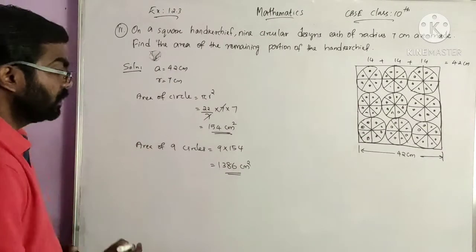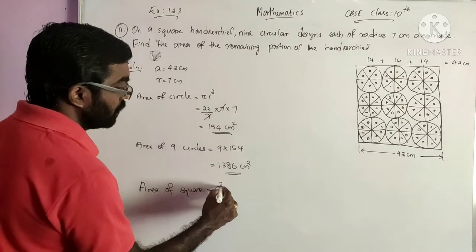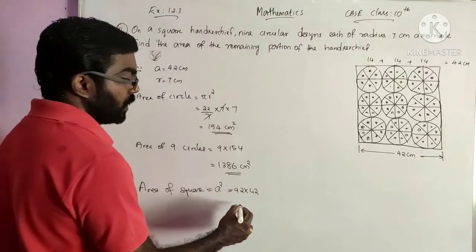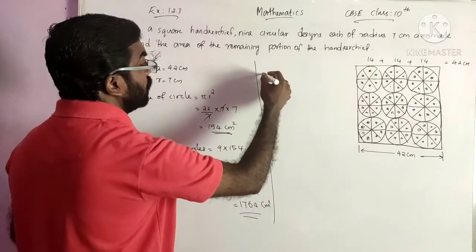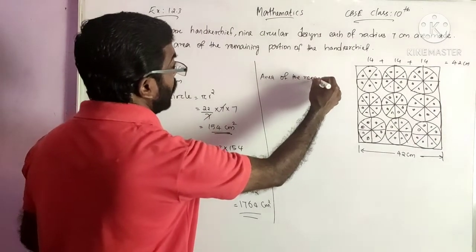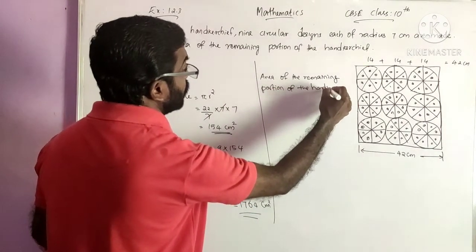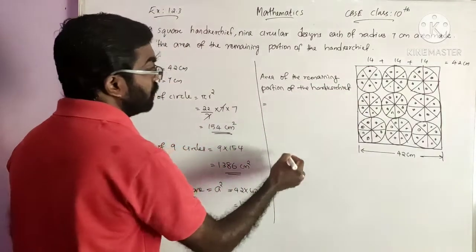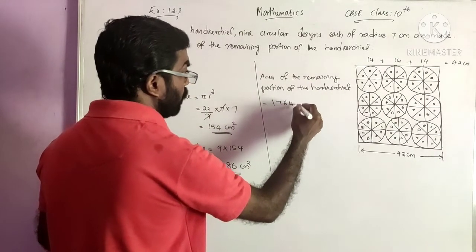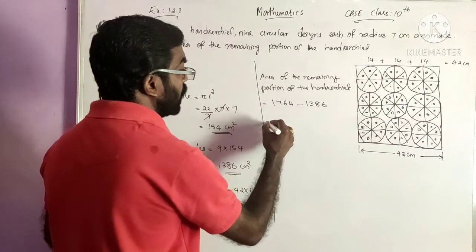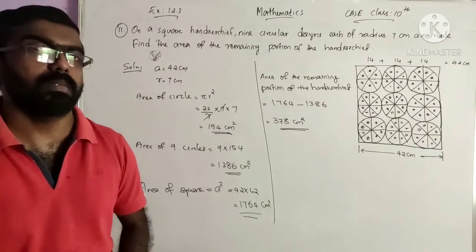Now we find the area of the square. Area of square equals A square, that is side into side. So 42 into 42 gives 1764 cm square. The area of the remaining portion of the handkerchief equals area of square minus area of 9 circles, that is 1764 minus 1386. The final answer is 378 cm square. This is the area of the region except the design.